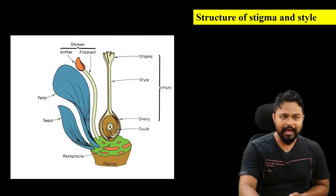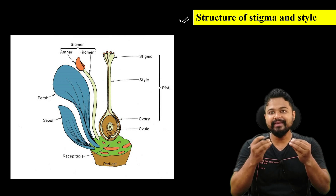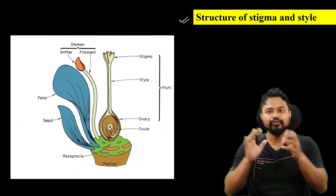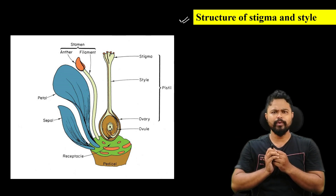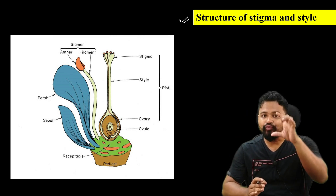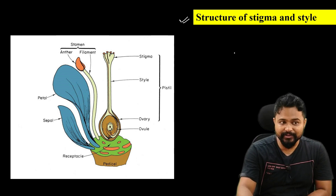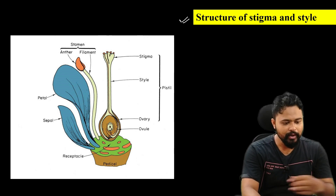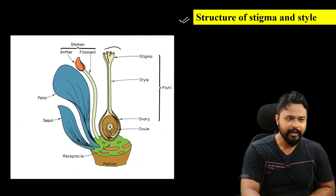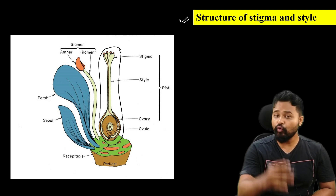First, I will cover the basic structure of stigma and style. What do you want to know about stigma and style? What do you want to know about female reproductive structure? This is another important part. This is a female reproductive structure — a very important part.